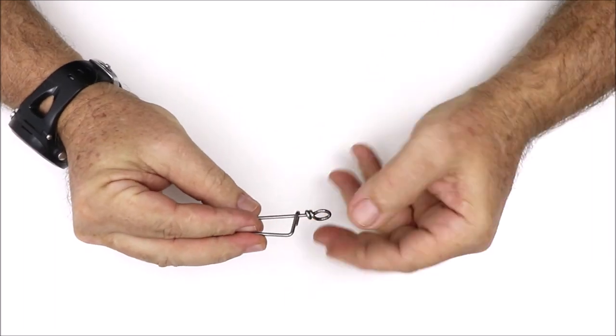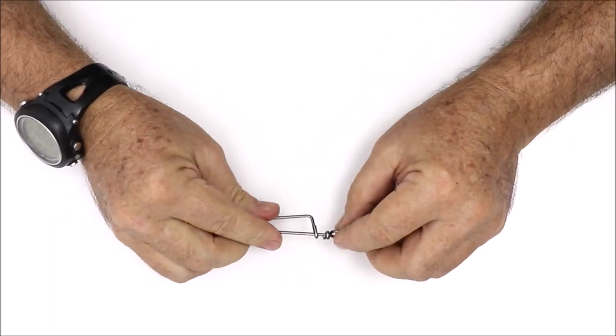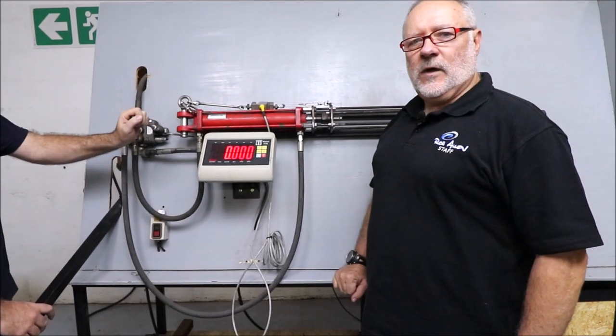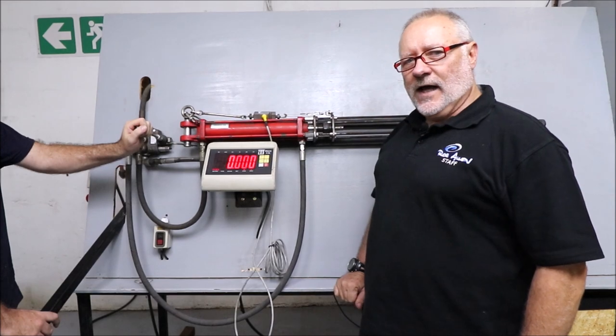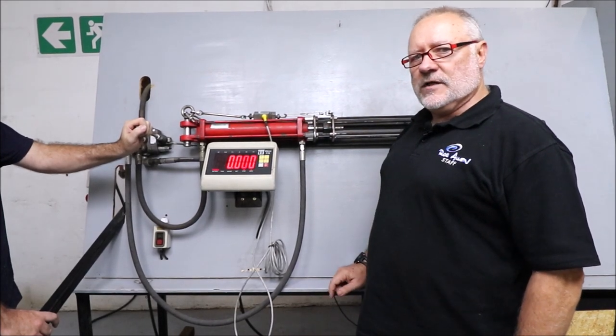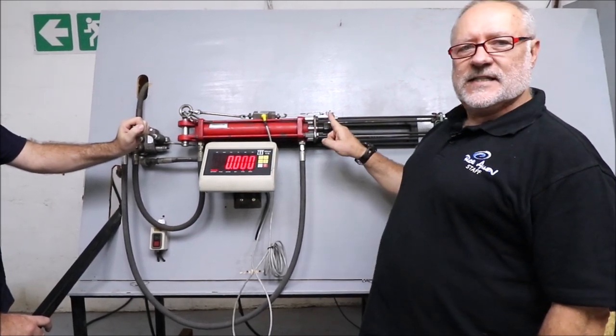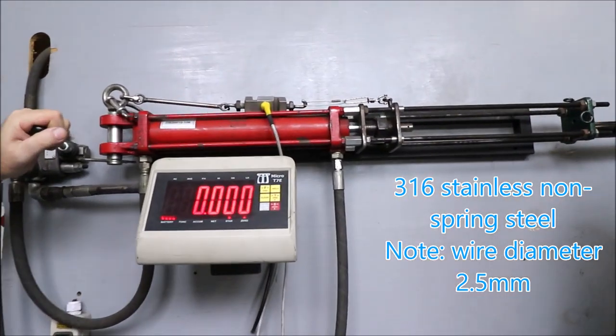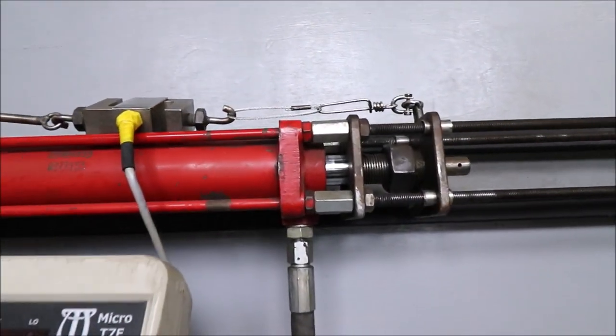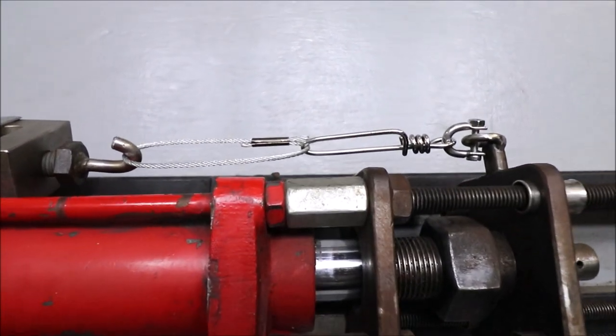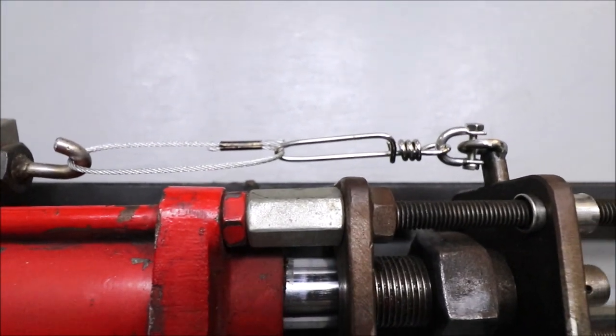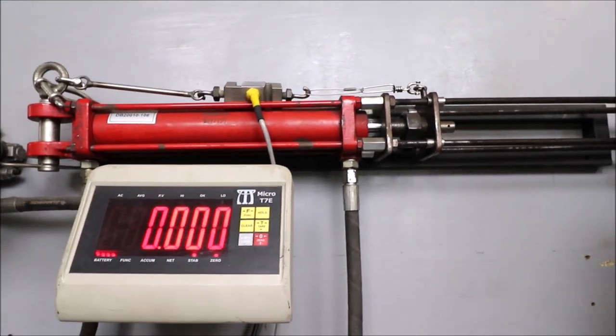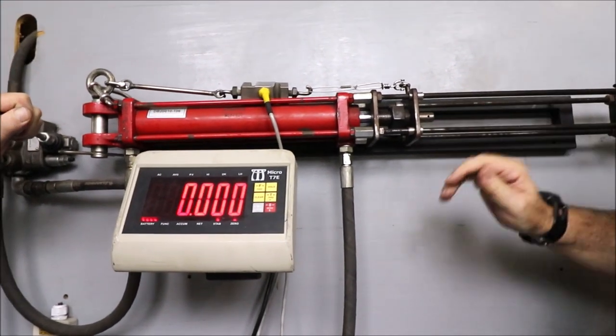Okay, we have our testing station. We're now going to first test the 316 non-spring steel snap clip. Here it is. It's attached one side by a shackle and the other side by two millimeter stainless steel cable, and we're going to load it until it breaks. Let's see what we get up to. Go for it, Mike.